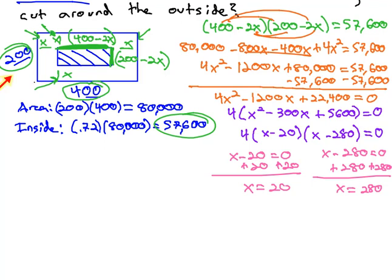If it's 200 rods tall, can we cut 280 off the top and the bottom? Not really. So he must have made a border of 20 rods around his field.